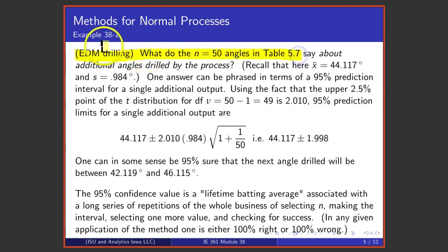To return to that data set of table 5.7 in Vardaman and Jobe, there 50 angles had an average of 4.711 degrees, a standard deviation of 0.984 degrees, and were reasonably normal looking. If I was to then ask the question where do I think the next angle value would fall, I could make prediction limits for it. And here, for example, are 95% prediction limits. This is X-bar, there's S, there is the t-value for 49 degrees of freedom, the upper 2.5% point. Here is S and here's the sample size, and that gives me 4.117 plus or minus about 2 degrees.